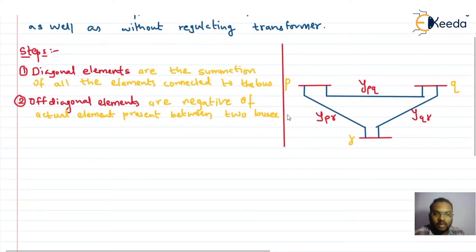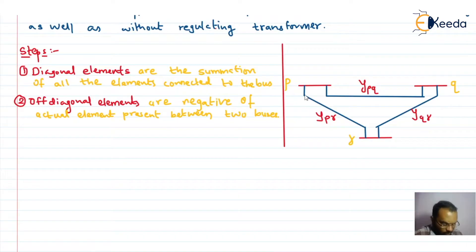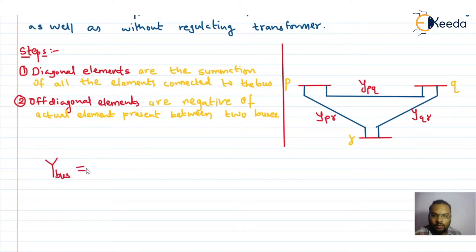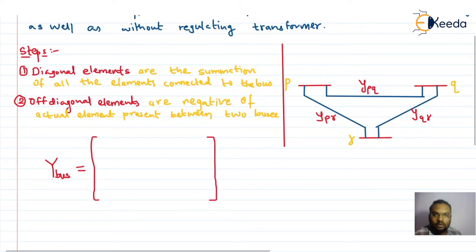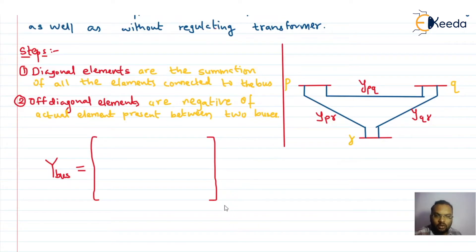Now let us see how we can write the diagonal elements for a simple three-bus system. I have given here a simple three-bus system and we will compute the YBUS matrix using the direct inspection method. Since the number of buses is three, the order of the YBUS matrix will be three by three, where n equals three equals the number of buses.